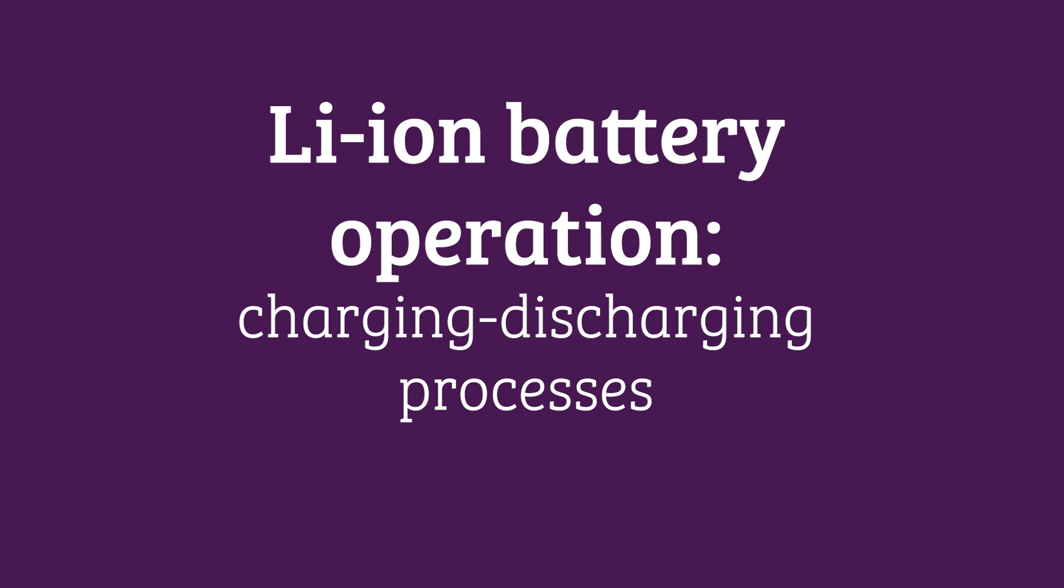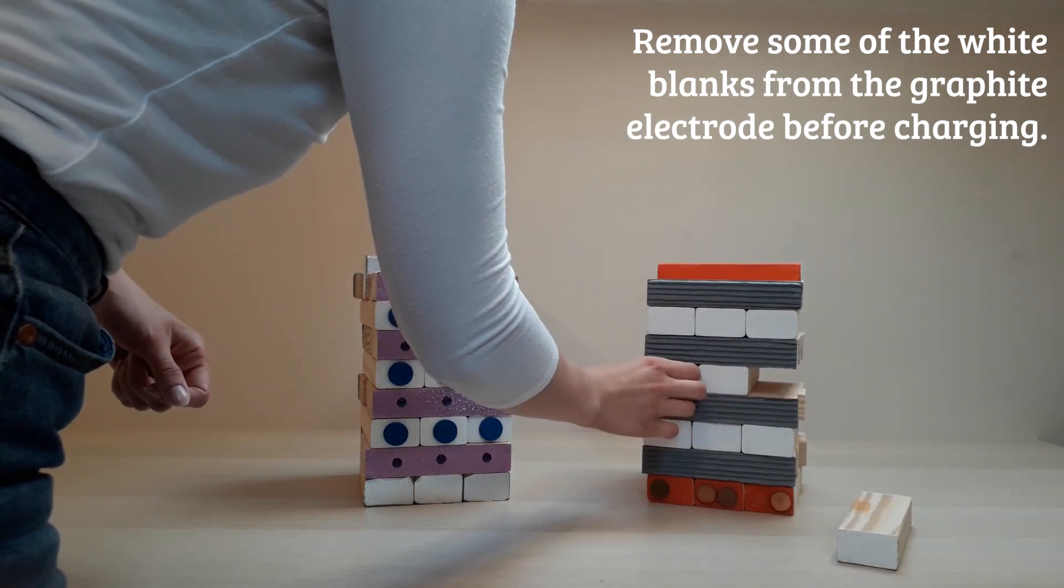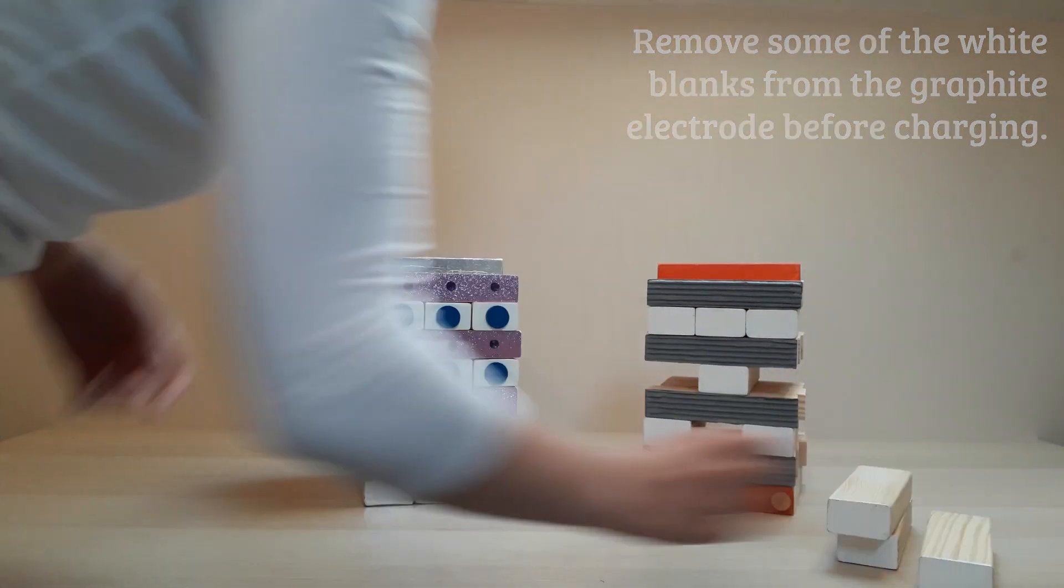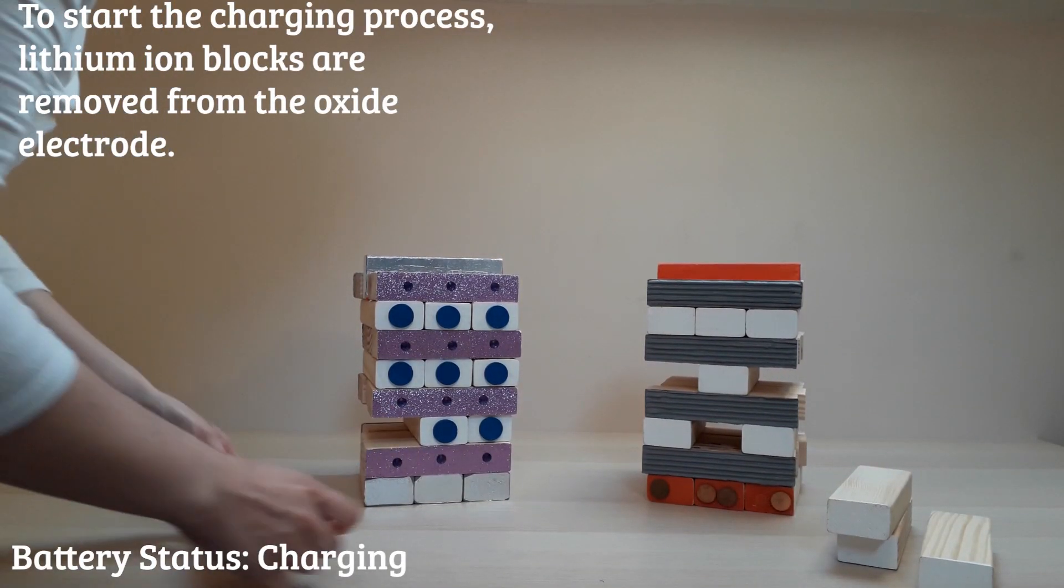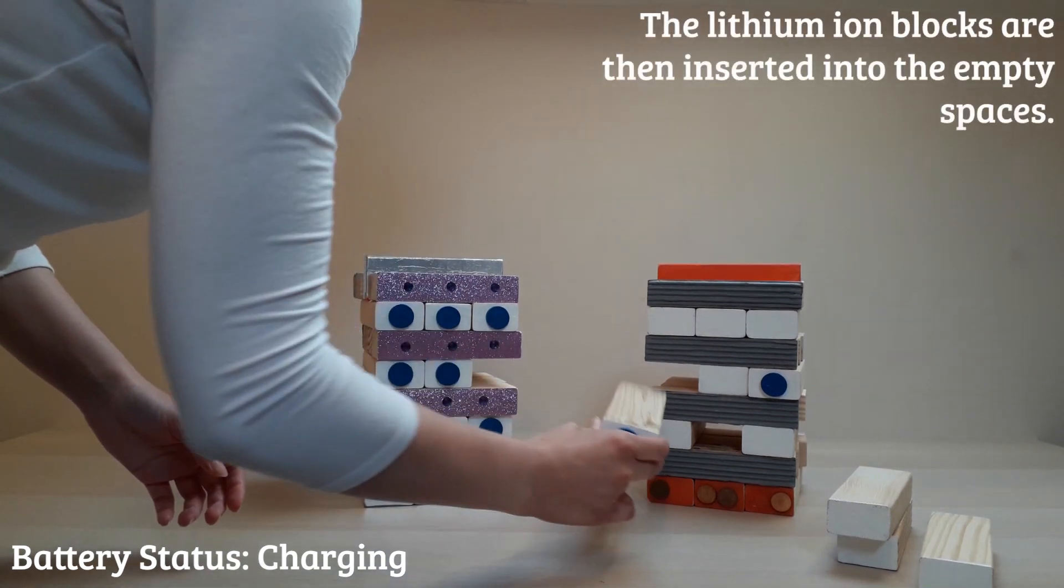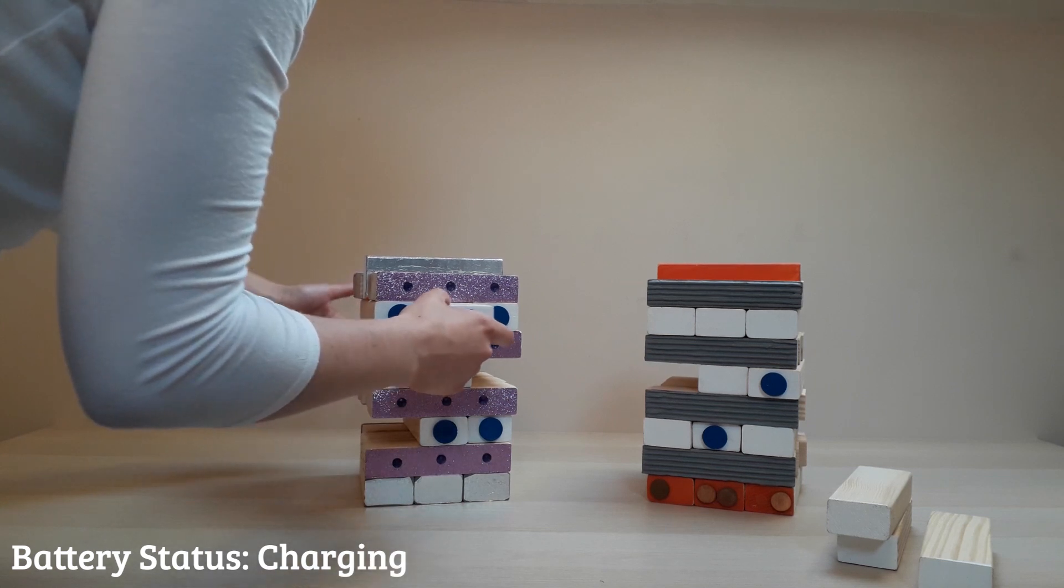Lithium ion battery operation: charging and discharging processes. To help visualize and support students in the first charge, remove some of the white blanks from the graphite electrode. On charging, the lithium blocks are removed from the oxide electrode and inserted into the graphite electrode. We are now charging our battery. This is an uphill energy process.